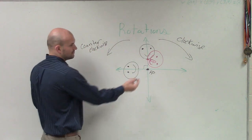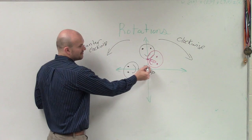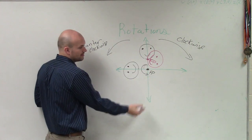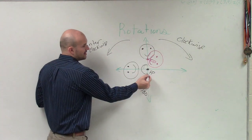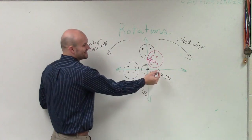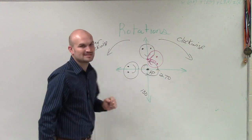Real quick, if this is 90 degrees, then if I rotate something halfway around, then we'd call that what? 180. And then if I go one more, 270, very good. And then all the way around would be 360.